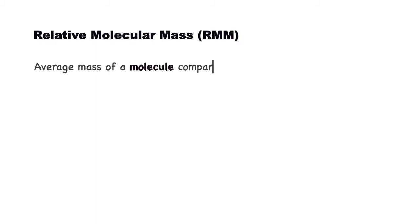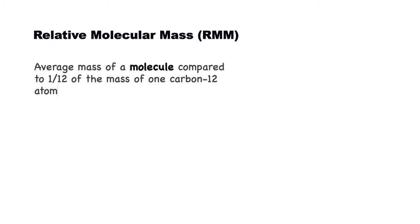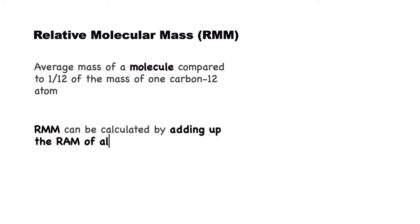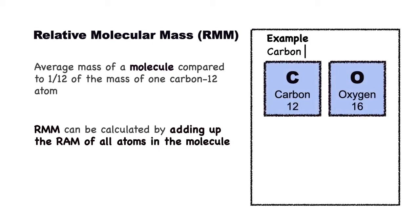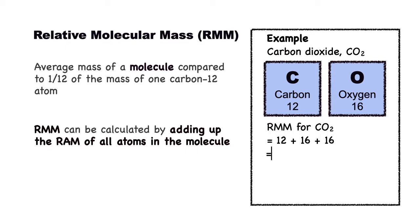Next is relative molecular mass, R-M-M. It is the average mass of a molecule compared to 1/12 of the mass of one carbon-12 atom. It can be calculated by adding up the relative atomic mass of all atoms in a molecule. For example, for carbon dioxide, CO2: 12 plus 16 plus 16, or another way, 12 plus 2 times 16, to get 44.